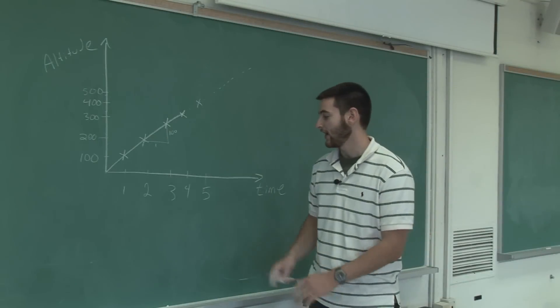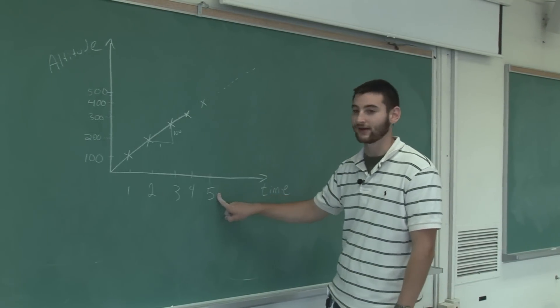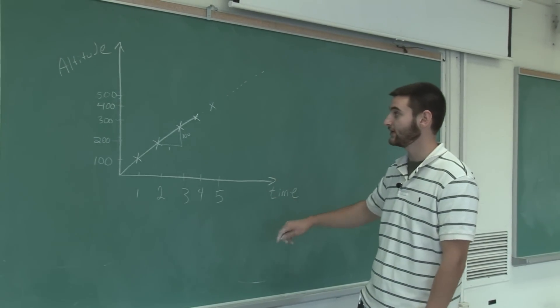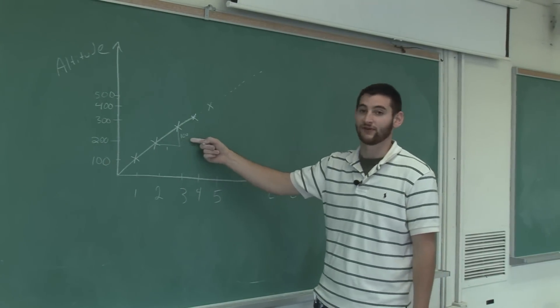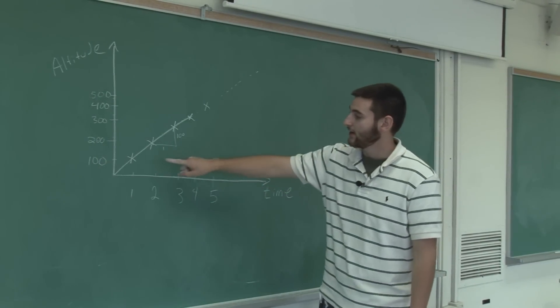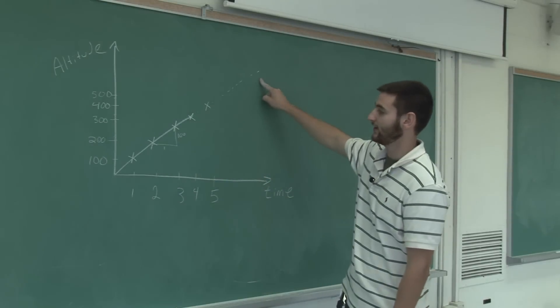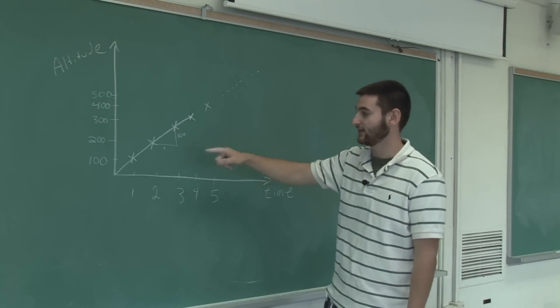Using this method, I can find out the altitude of the rocket after five, six, seven, eight, however many seconds I want by using the rule of increase of 100 feet per every second. This way, I can find the value of the height even beyond the data that I've already read.